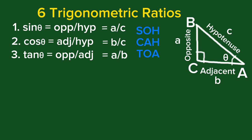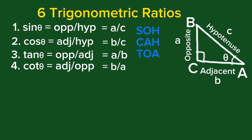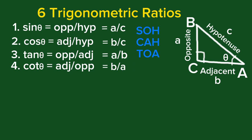Number four, we have cotangent. Cotangent theta is adjacent over opposite, that is B over A. Let's compare cotangent and tangent. We notice that cotangent is a reciprocal of tangent. We can rewrite cotangent as 1 over (opposite over adjacent), which is 1 over tangent theta.